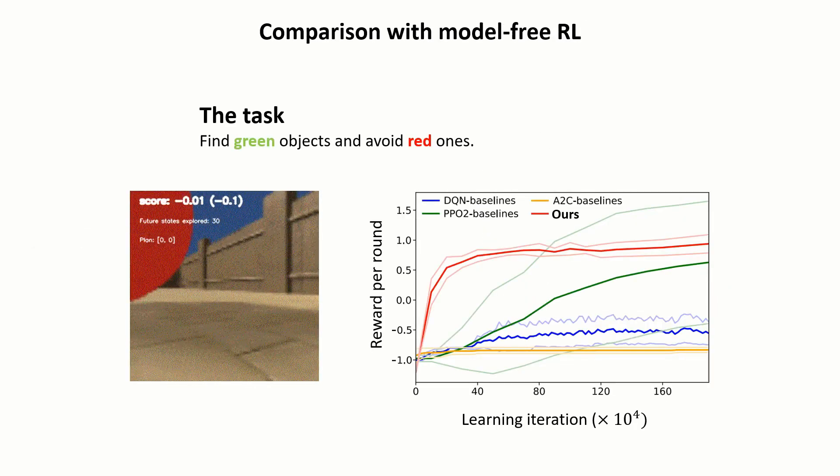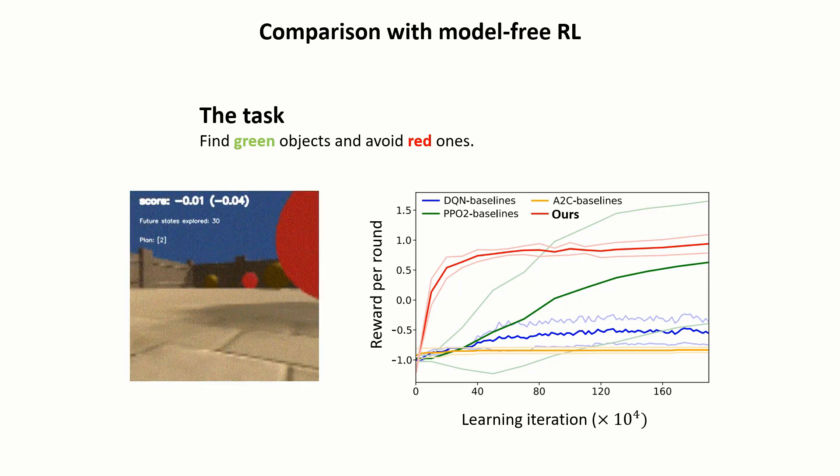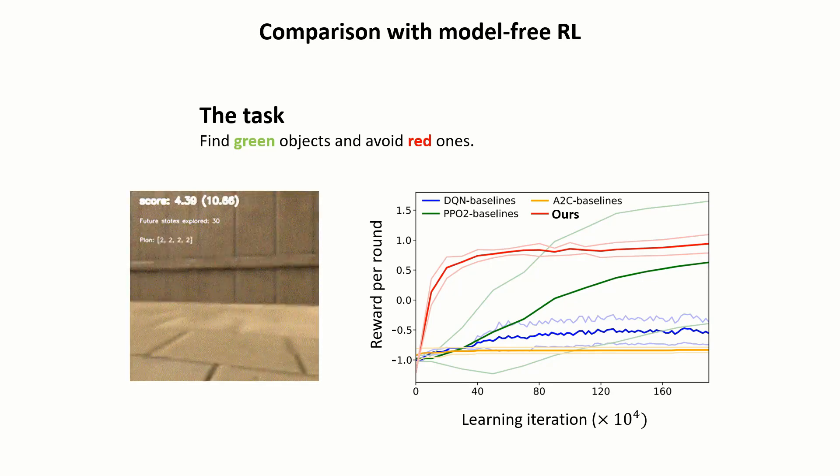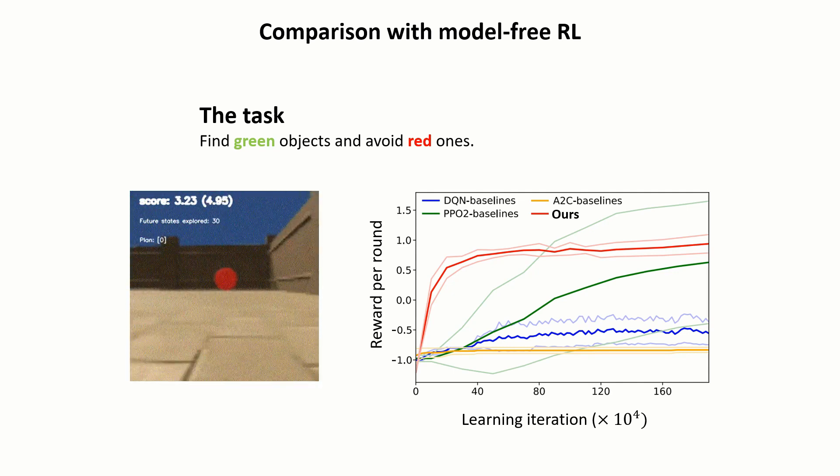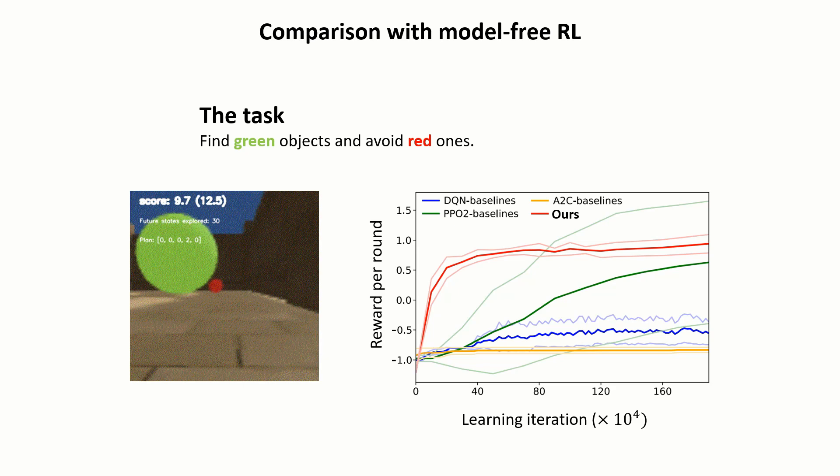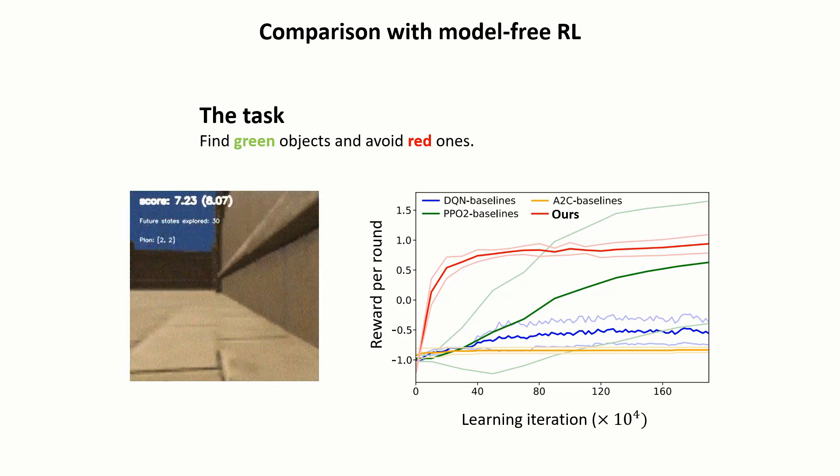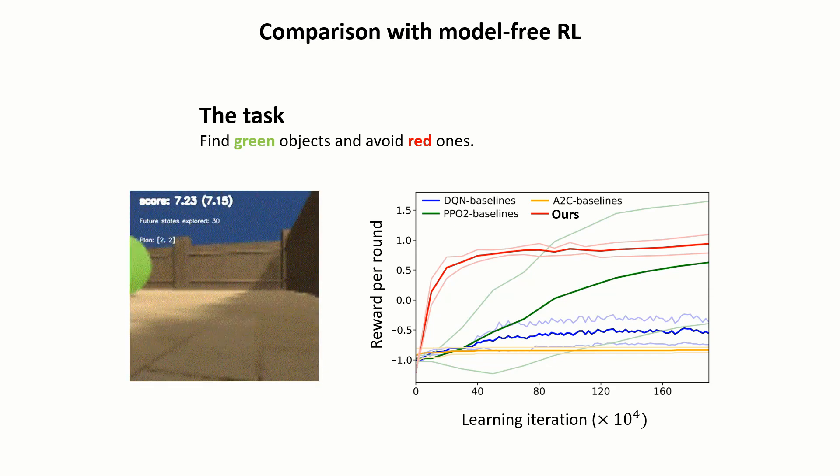Furthermore, we also test our agent in the more complex animal AI environment, where we show that it learns visual foraging tasks much faster than typical model-free reinforcement learning agents, having a performance comparable to a PPO2 baseline given the same learning iterations.